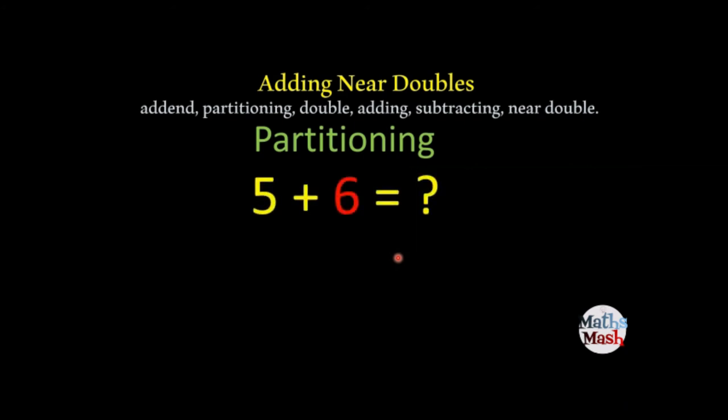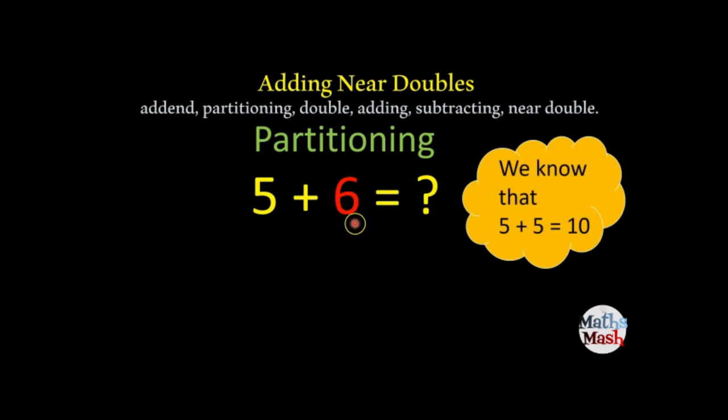The next thing we need to look at is partitioning. And suppose we have our question here 5 plus 6. You always start with what you know. And you should know by now that 5 plus 5 makes 10. So as I said, you always start with what you know. And we're going to partition this 6. Now, partitioning basically means that you break it up into two numbers that make this number. So we're going to look for two number combinations that make 6.